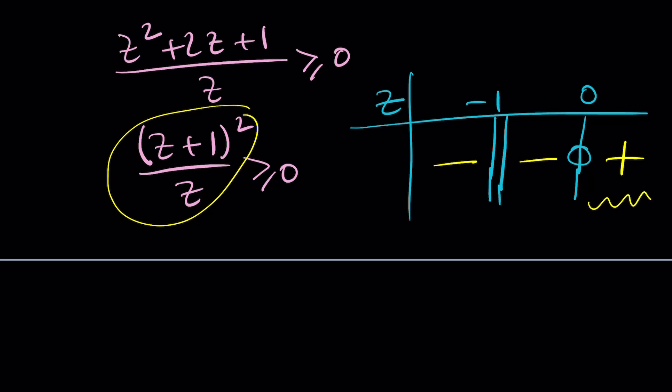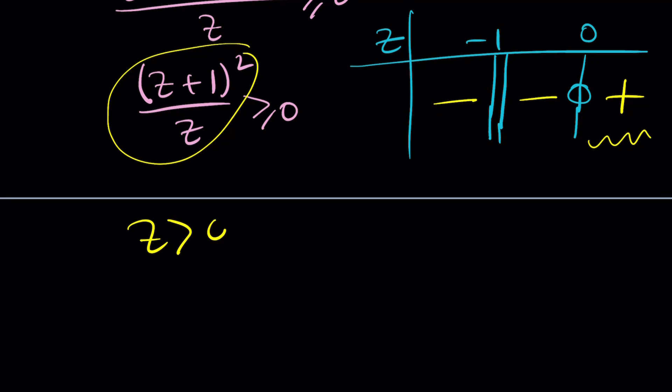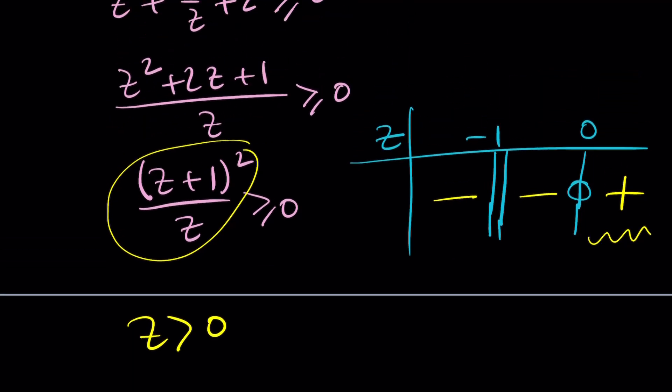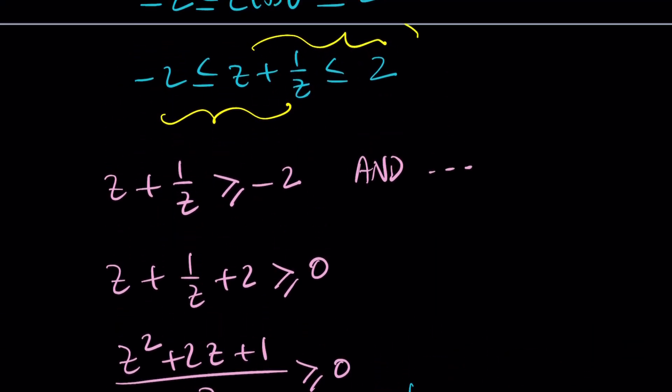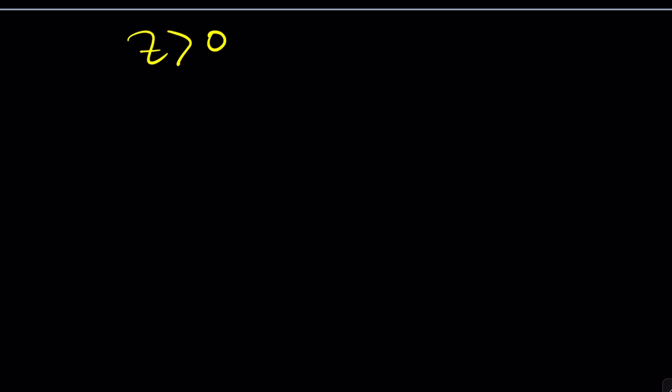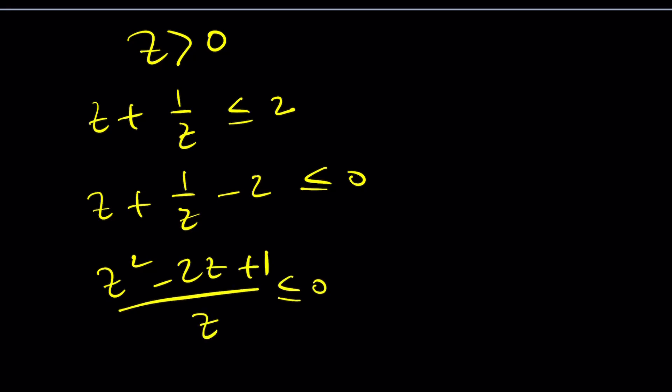I want this whole thing to be positive or greater than or equal to 0. So I want z to be greater than 0. Yes, z must be greater than 0. Because if z is 0, it's undefined. So from here, I get z must be greater than 0. Now let's solve this part. Z plus 1 over z is less than or equal to 2. Put everything on the same side. Same idea. Make a common denominator.